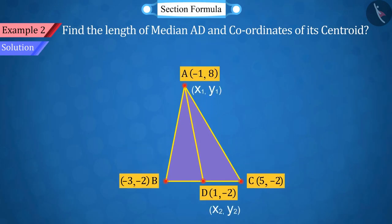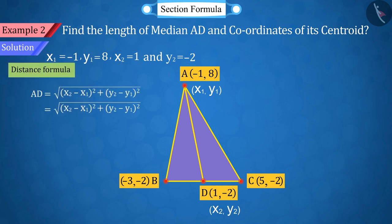Well done, here we use the distance formula between two points, where the coordinates of point A are x₁=-1, y₁=8, and point D are x₂=1, y₂=-2. The values of x₁, y₁, x₂, and y₂ are placed in the distance formula.